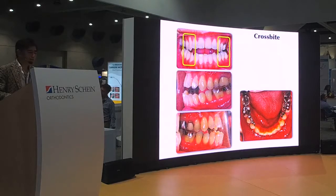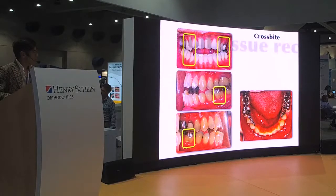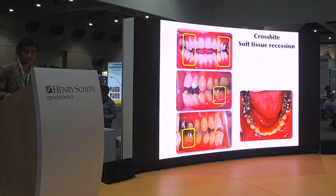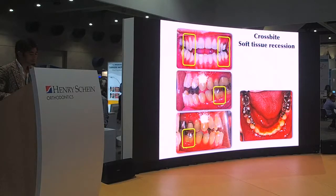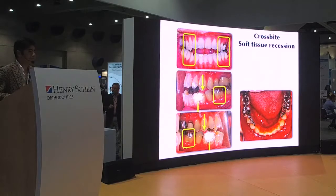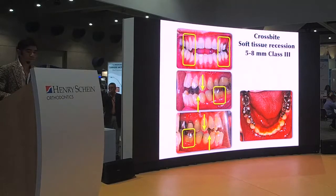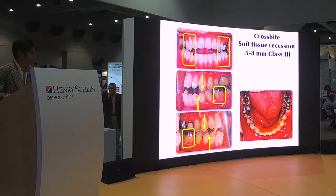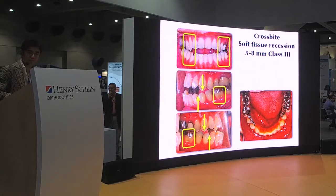We also look at soft tissue recessions of the lower first molars, which is very difficult to manage even without orthodontics. This is a hopeless tooth in the future — it may need to be extracted. The canine relationship is 5 to 8 millimeters Class 3. So how do you correct crossbite, gum recessions, and Class 3 of 5 to 8 millimeters in a 45-year-old adult male?